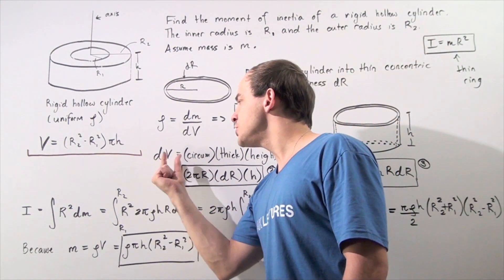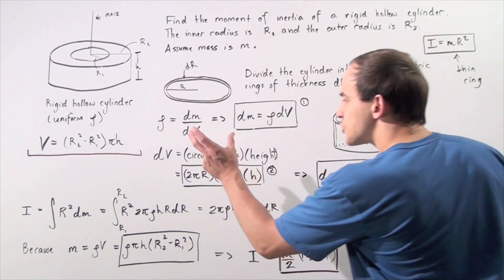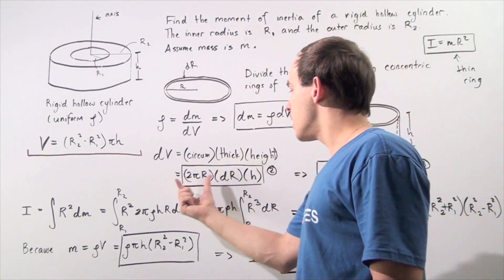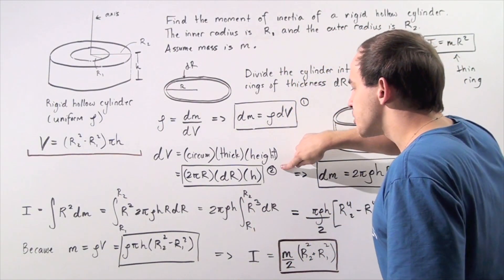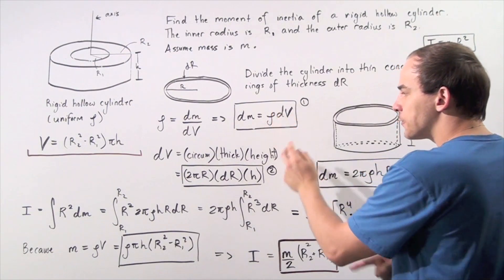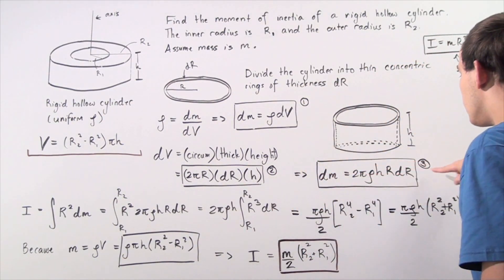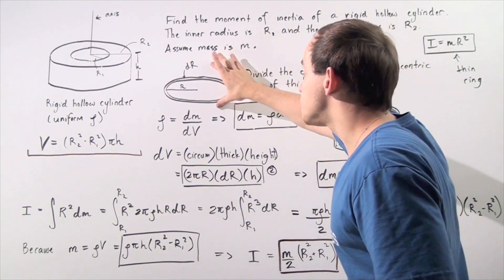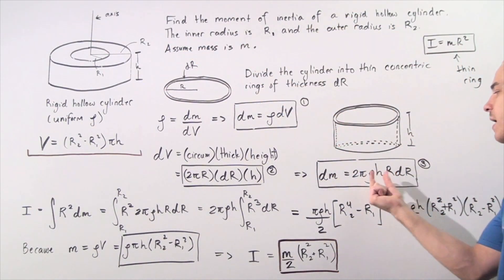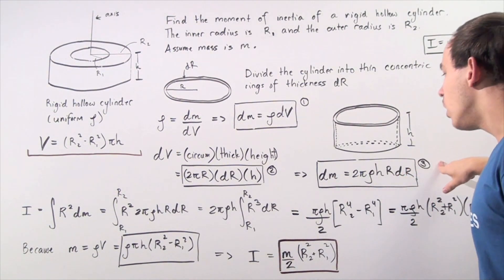Now, what is the infinitely small change in volume? The volume of a thin concentric ring is: circumference × thickness × height = 2πr · dr · h. So dV = 2π·r·h·dr. Let's call this equation 2. Plugging equation 2 into equation 1 — replacing dV with this expression — we get: dm = 2π·ρ·h·r·dr. Let's call this equation 3.